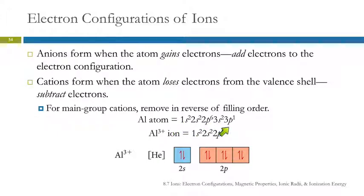Removing electrons, you're going to take out the 3p electron first, and then the 3s electrons — one and then the other. So let's draw that out.